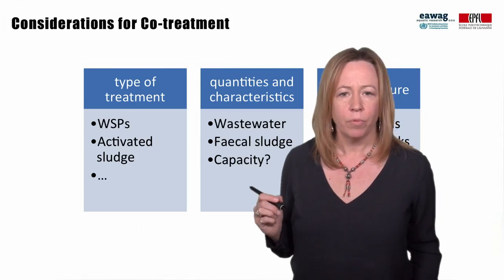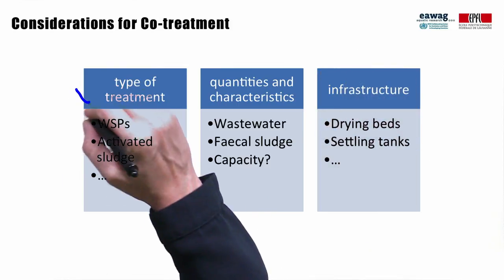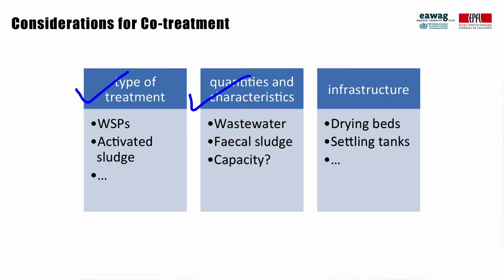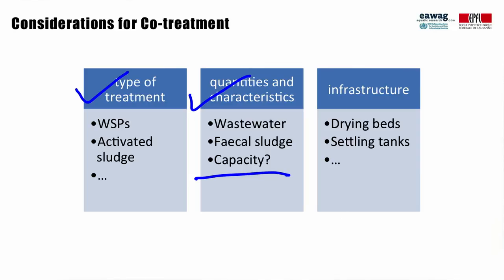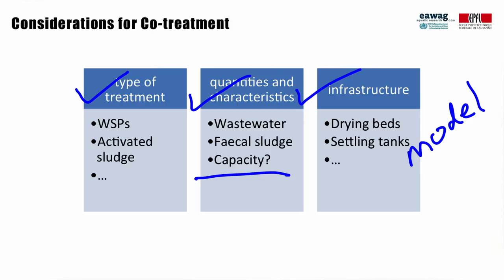What is possible for co-treatment, if anything, will depend on the type and design of technologies, the quantities and characteristics of wastewater and fecal sludge, including, most importantly, whether the treatment plant is currently at capacity or not, and existing infrastructure. It will also require a competent wastewater engineer who also understands the complexities of fecal sludge to model any proposed modifications and also verify with in-field testing.